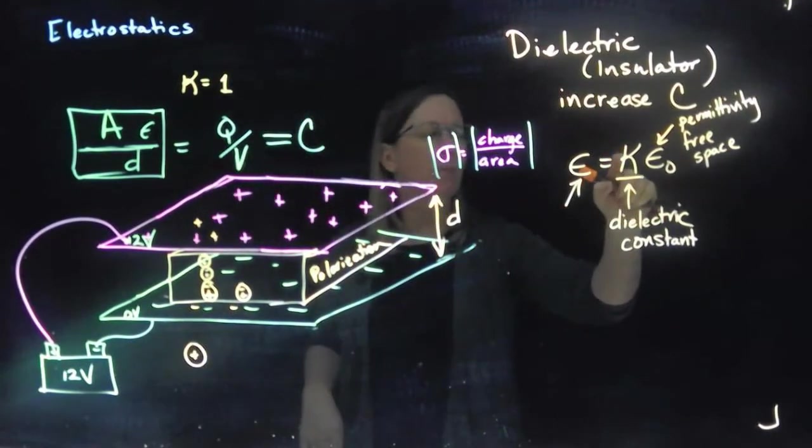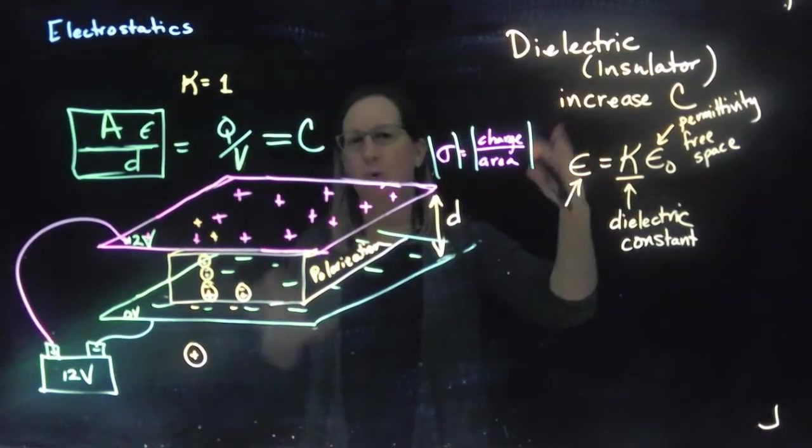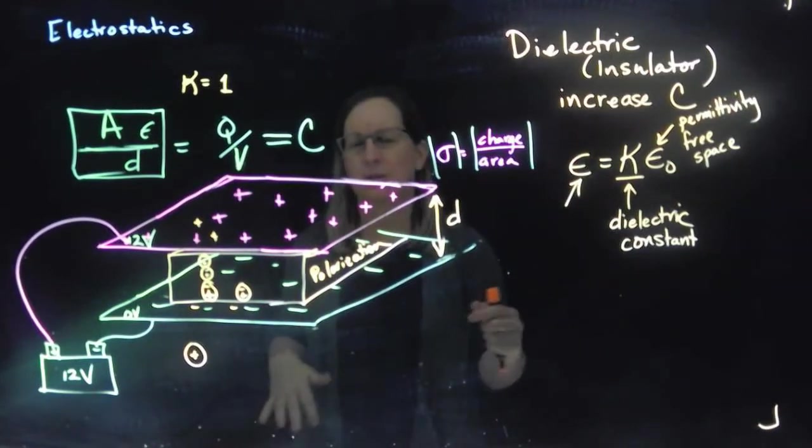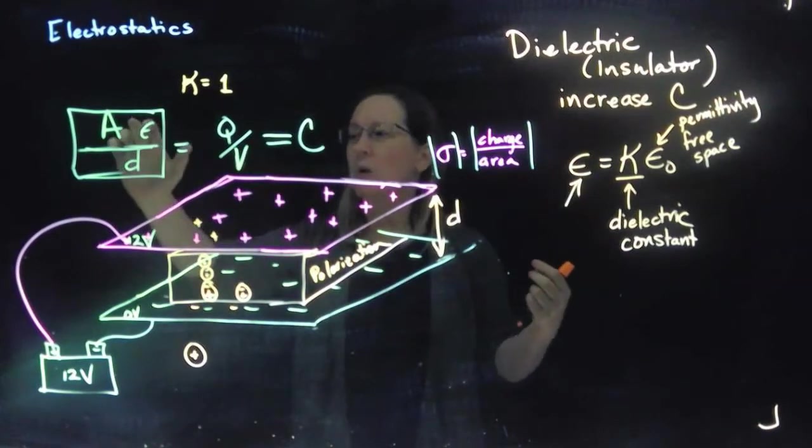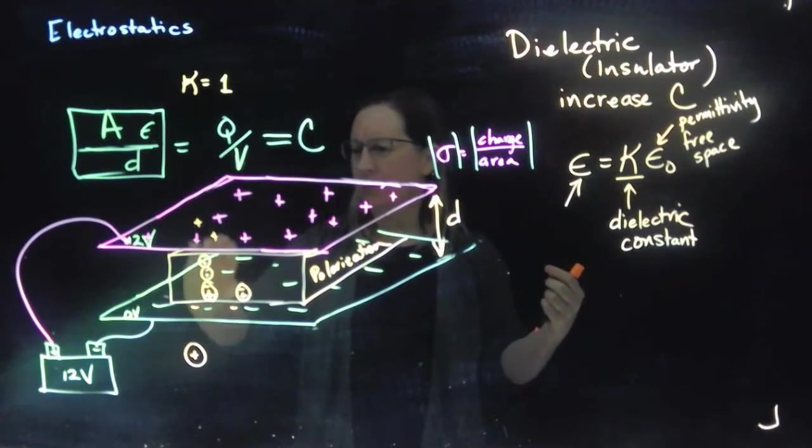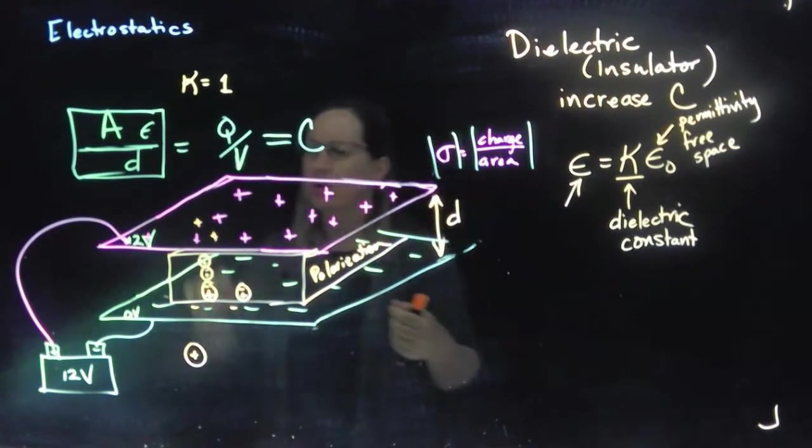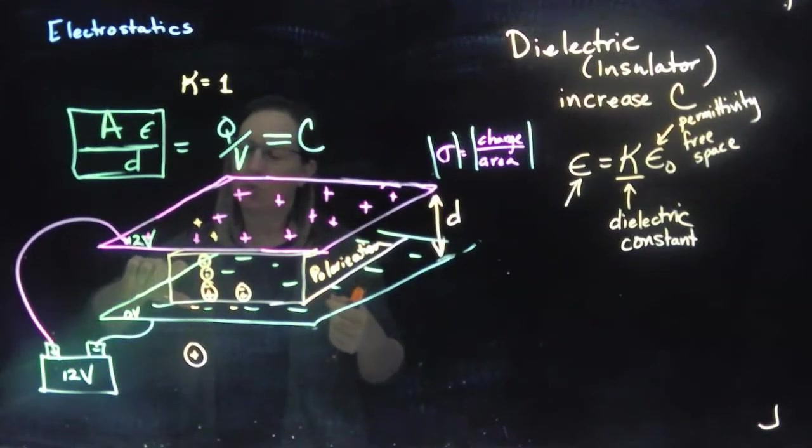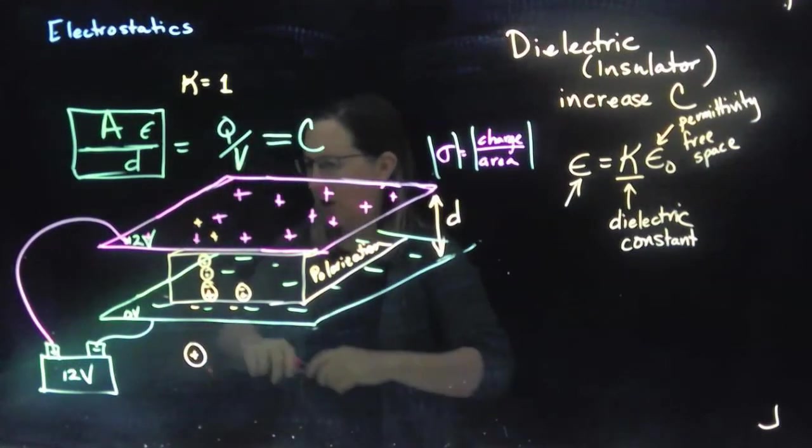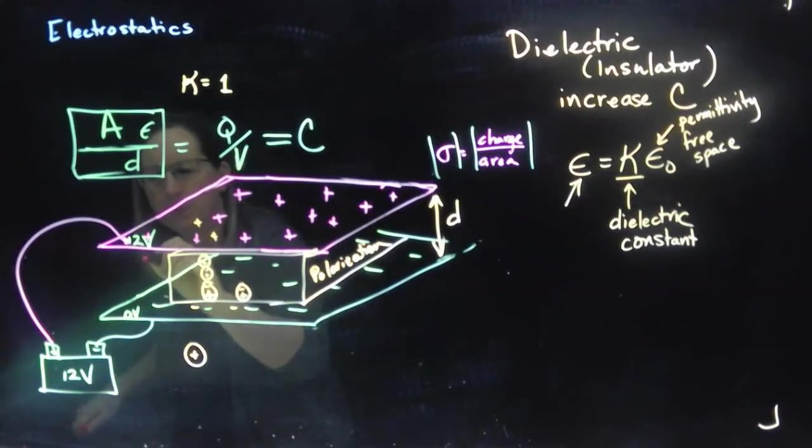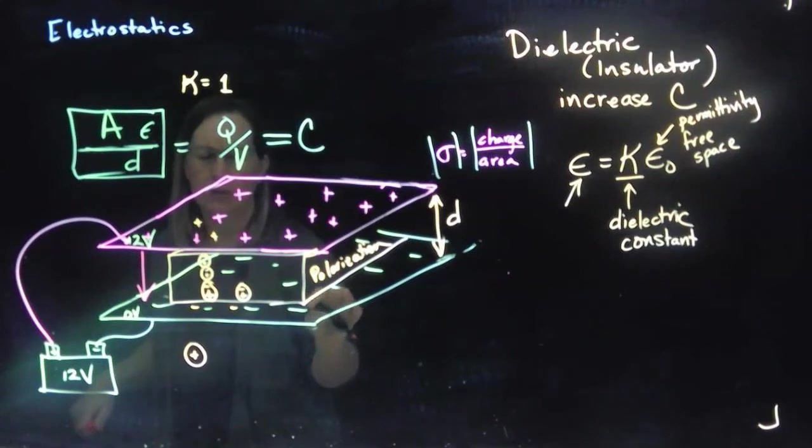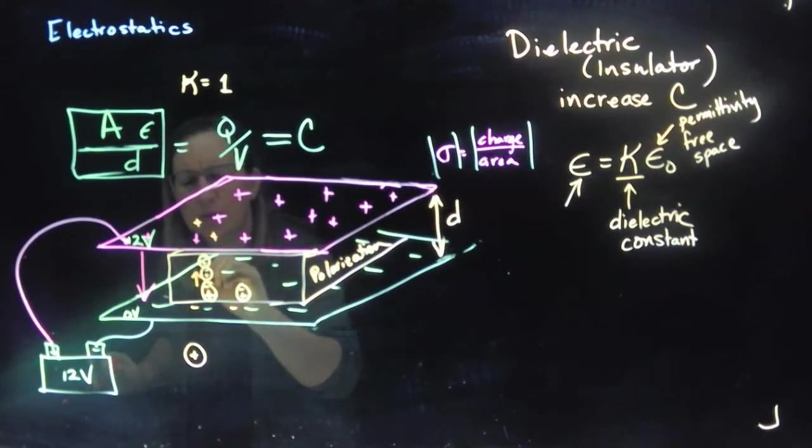But for our dielectric material, we might have one where this kappa or this K, this dielectric constant, is like 4. Then we've got 4 times the capacitance just from this polarization. And what's happening here is, of course, that as we go along, we have this electric field that we had before when the dielectric constant wasn't here. And then this sets up a little tiny electric field in this way.